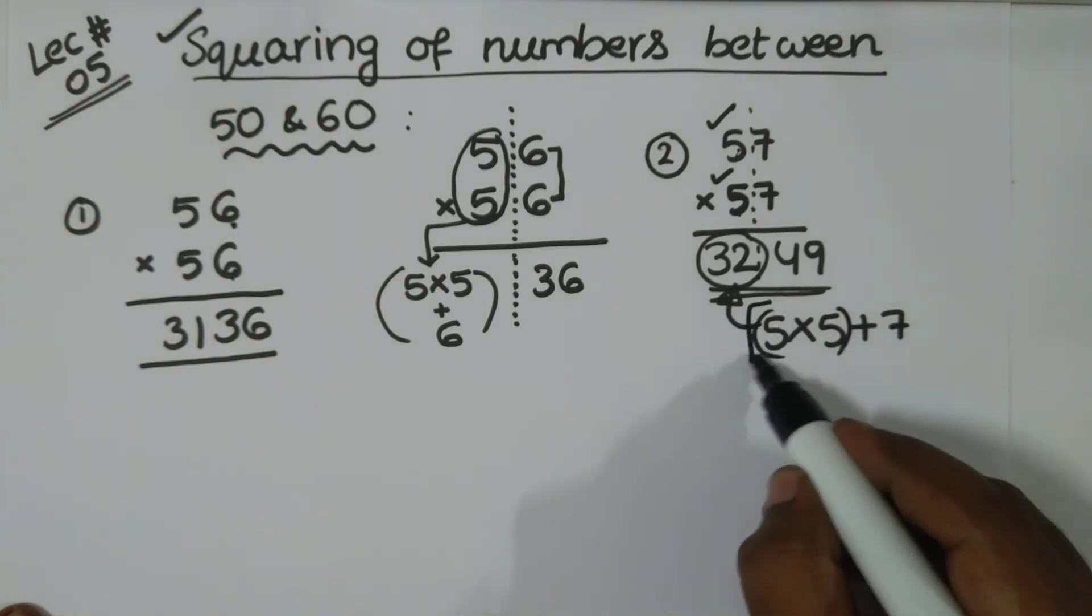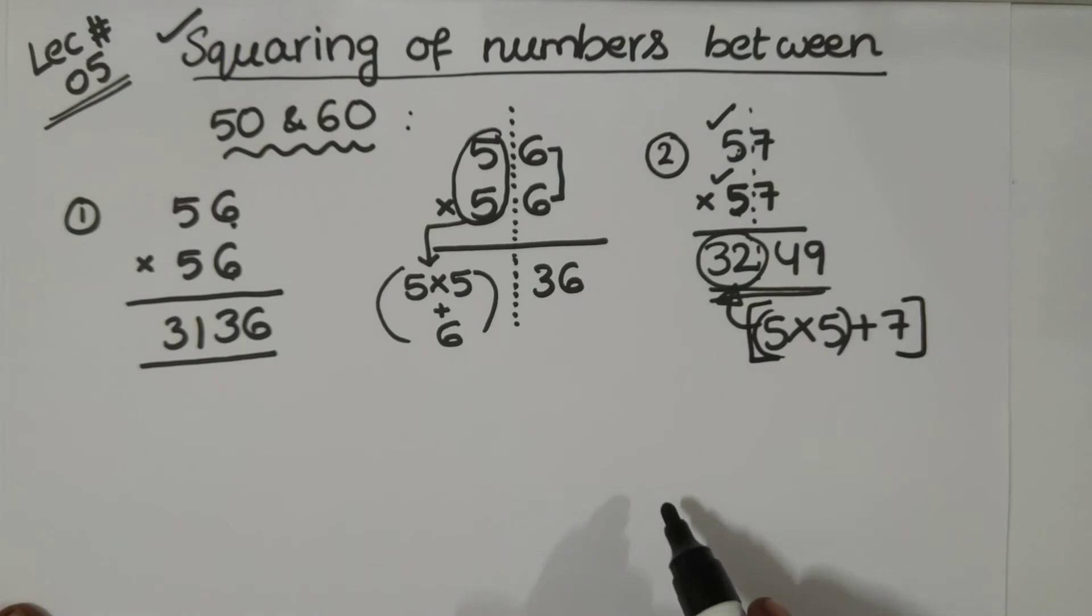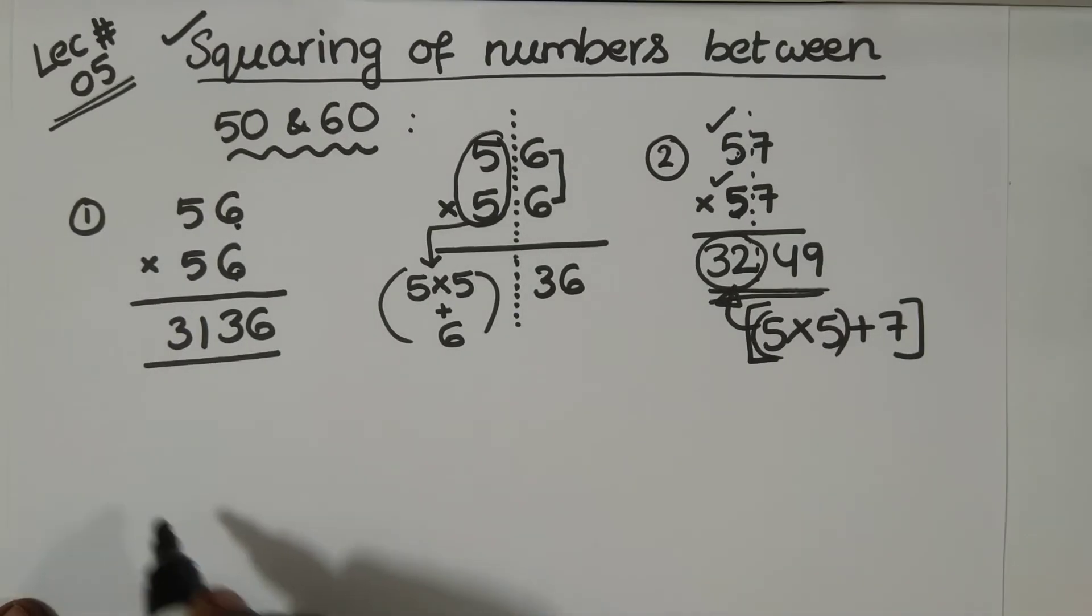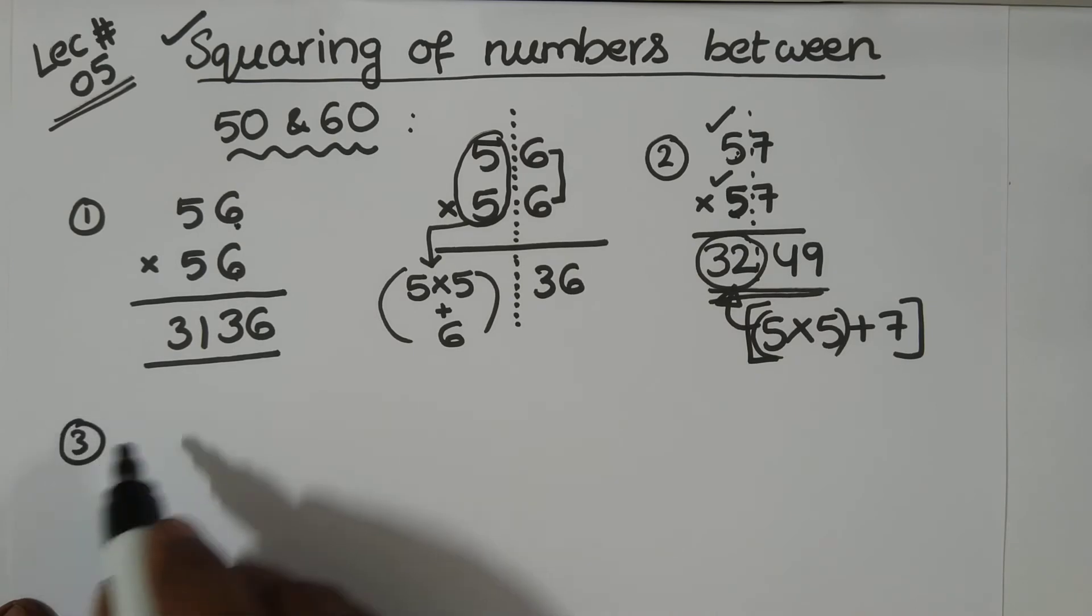So, 5, 5 is 25 plus 7, 32. Let's take some other examples. Say, let me go for another one. 52 multiplied by 52.